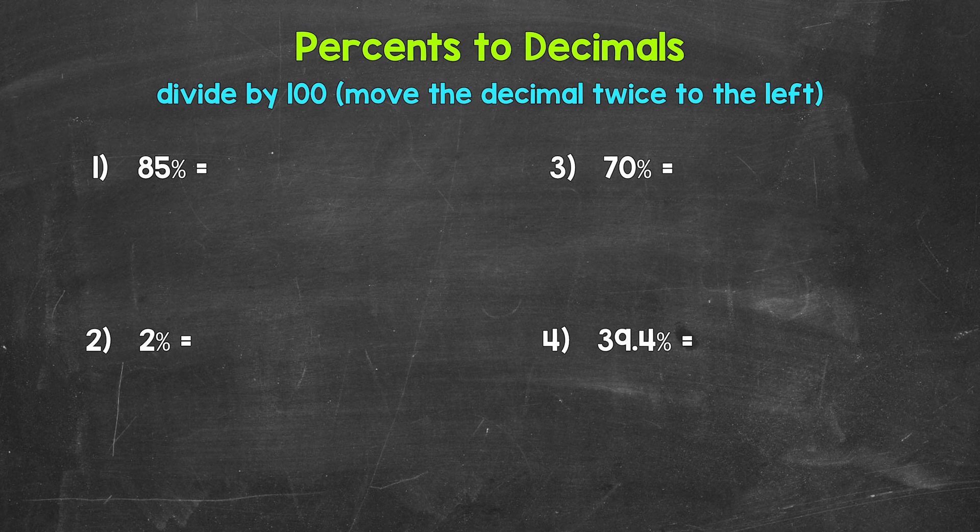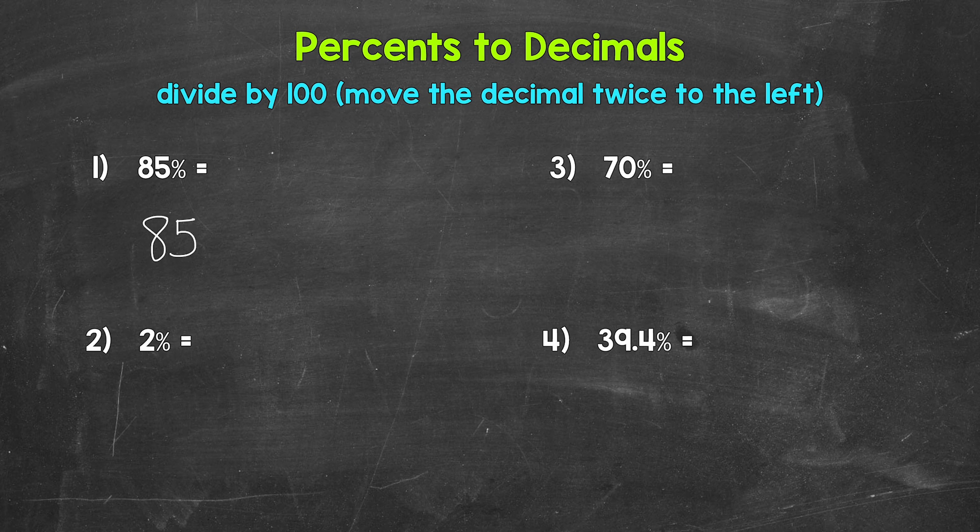So for number one, let's divide 85% by 100. For 85%, the decimal comes after the five, after the ones place. So I'm going to rewrite this as 85, and then the decimal. We can always write a decimal after a whole number, if need be. We typically don't write decimals or see them with a whole number though, because they aren't needed. So something to keep in mind.